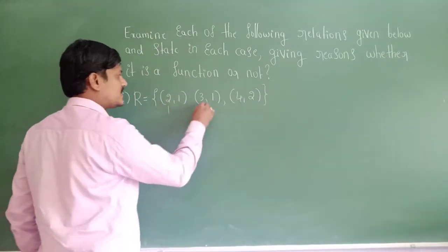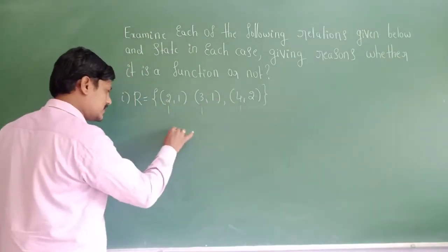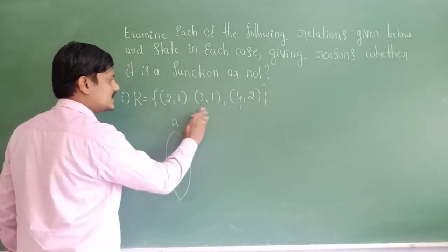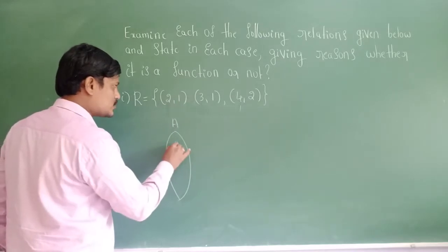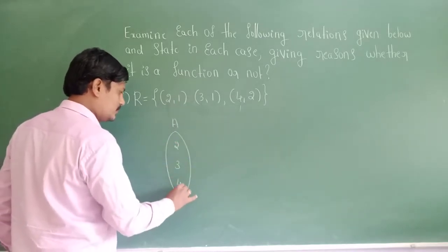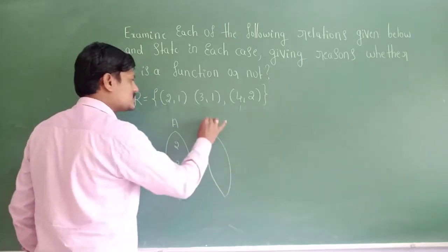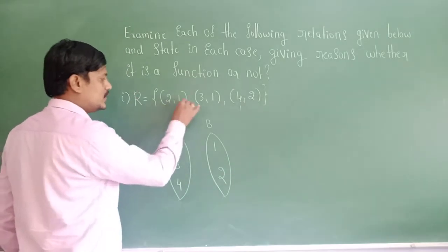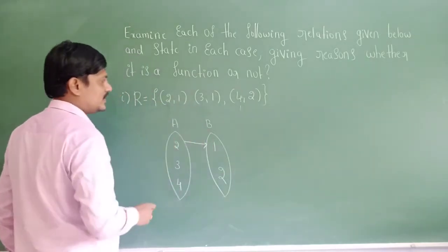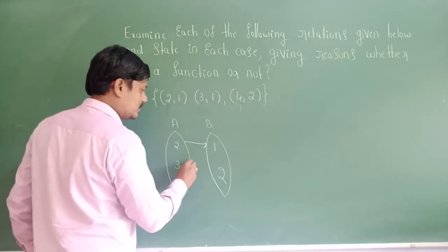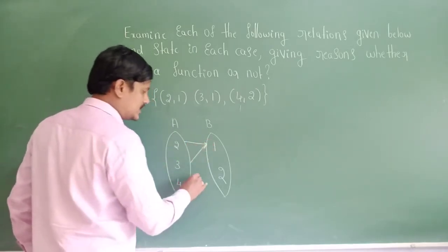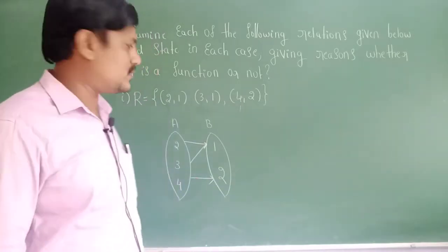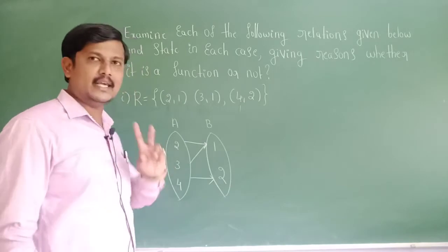Consider the first elements as set A values: 2, 3, 4. And the second elements as set B values: 1, 1, 2. Therefore, 2 is related to 1, 3 is related to 1, and 4 is related to 2. It is a function because every element of set A satisfies the condition.